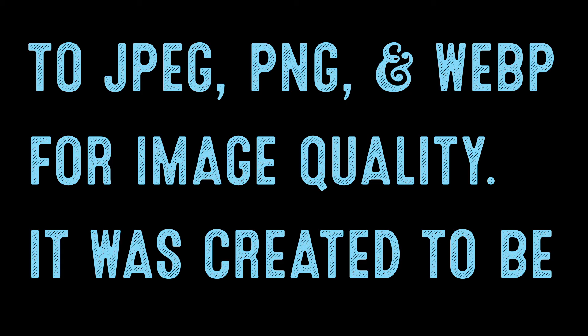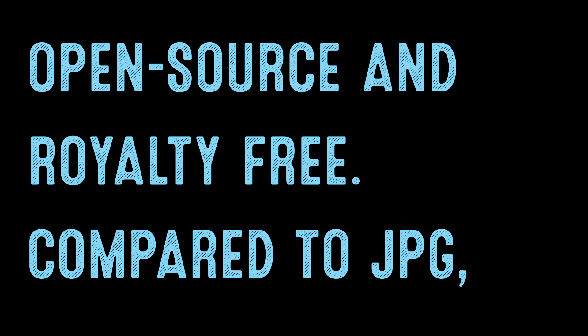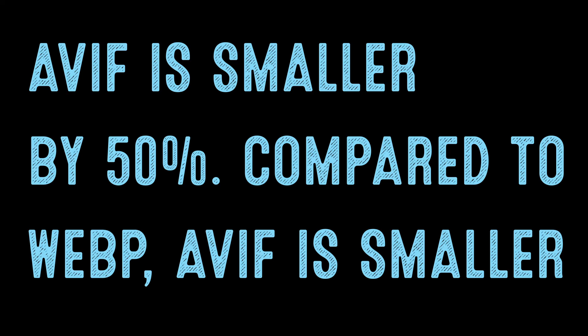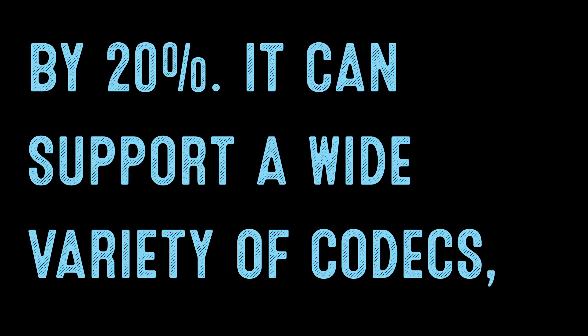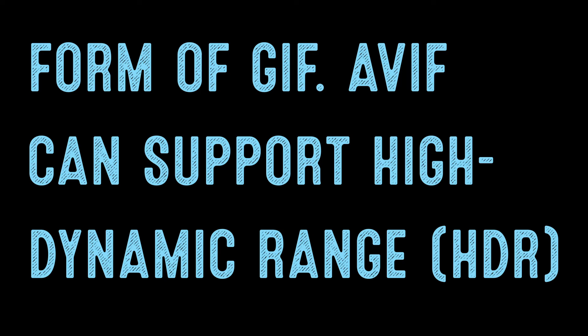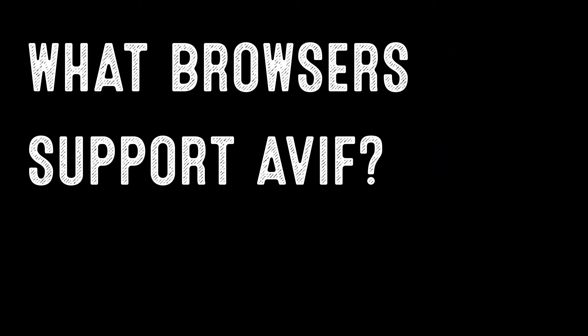AVIF is a super compressed image type that is superior to JPEG, PNG, and WebP for image quality. It was created to be open source and royalty free. Compared to JPEG, AVIF is smaller by 50%. Compared to WebP, AVIF is smaller by 20%. It can support a wide variety of codecs, can be lossy or lossless, supports transparency, and can store a series of animated frames, making it a lightweight form of a GIF. AVIF also supports high dynamic range (HDR) with higher brightness and color bit depth.